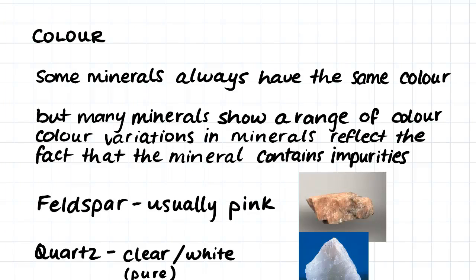The first property of minerals we will have a look at is colour. Some minerals always have the same colour, but many minerals do show a range of colour. These colour variations occur in minerals because it reflects the fact that the mineral actually contains impurities. Sometimes colour is not such a great indicator of what type of mineral we are looking at when we are trying to classify minerals, but sometimes it can be quite helpful.